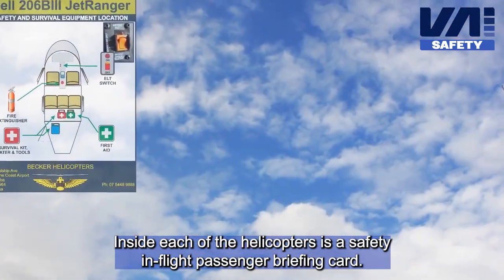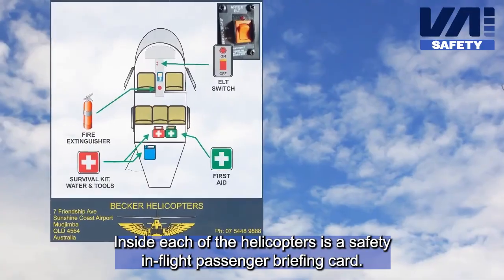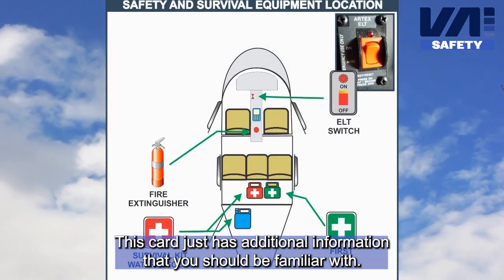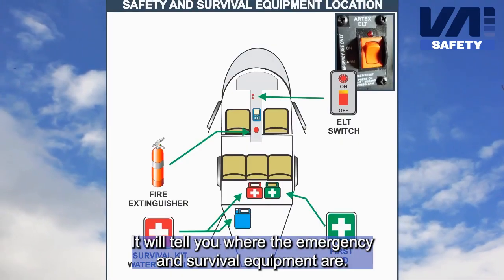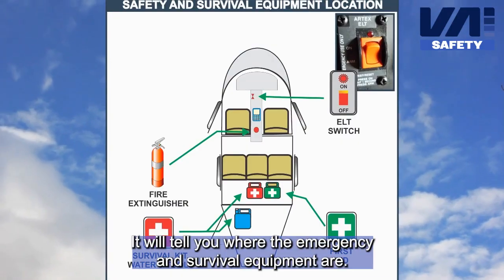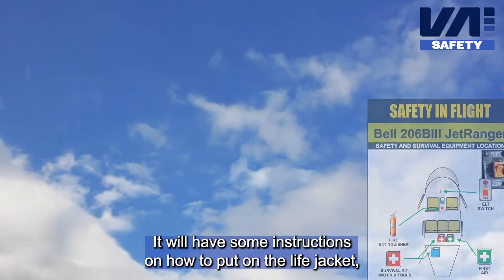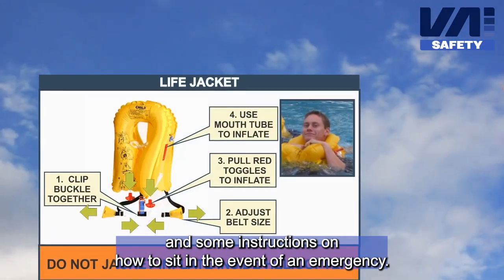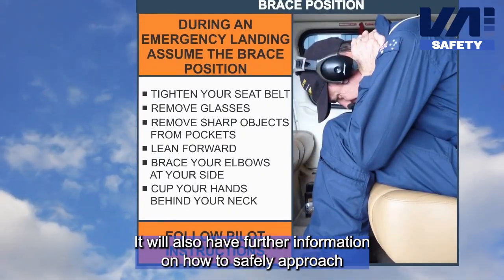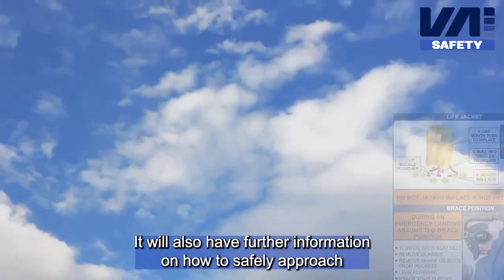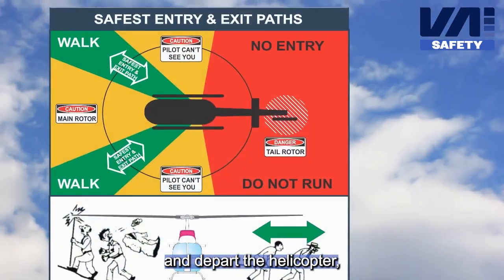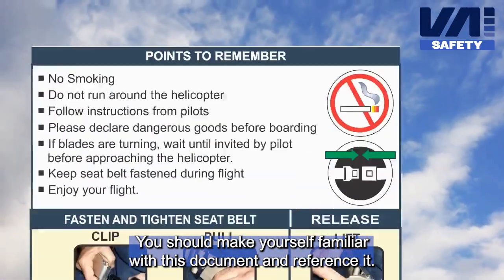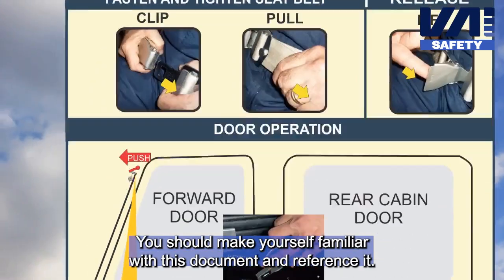Inside each of the helicopters is a safety in-flight passenger briefing card. This card has additional information that you should be familiar with. It will tell you where the emergency and survival equipment are, and will have instructions on how to put on a life jacket and how to sit in the event of an emergency. It will also have further information on how to safely approach and depart the helicopter, as well as how to use your seatbelt and the emergency exits. You should make yourself familiar with this document and reference it.